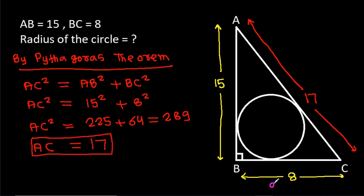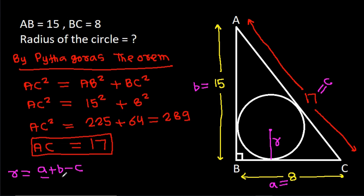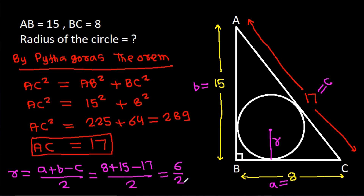So we have a equals 8, b equals 15, and c equals 17. The radius of the circle R equals (a plus b minus c) divided by 2, which is (8 plus 15 minus 17) divided by 2, that is 6 divided by 2, which equals 3.